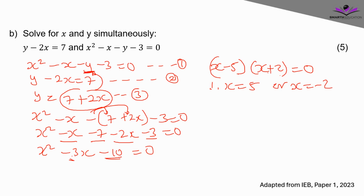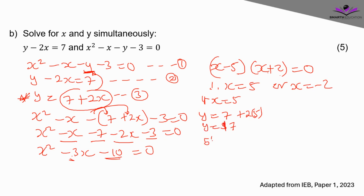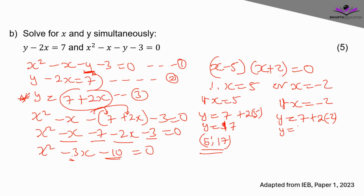Using equation 3 to find y: if x = 5, then y = 7 + 2(5) = 7 + 10 = 17, giving the intersection point (5, 17). If x = −2, then y = 7 + 2(−2) = 7 − 4 = 3, giving the second intersection point (−2, 3).